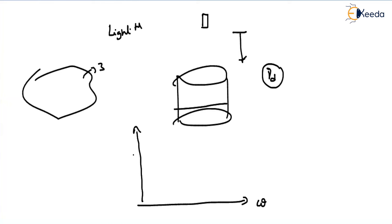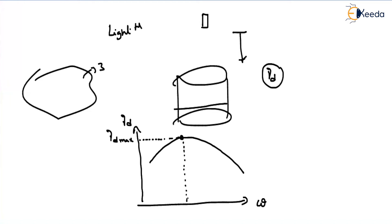We repeat this procedure by changing the water content and measuring the corresponding dry density each time. When we plot the graph, we observe that as water content increases, dry density first increases, then after reaching a certain point it decreases. The peak point gives us the maximum dry density, and the corresponding water content is called the Optimum Moisture Content (OMC).